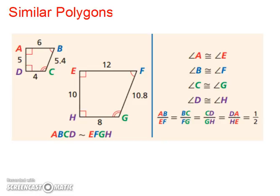Here's an example of similar polygons. Notice your corresponding angles are congruent and then your corresponding sides are proportional. They all give you a half when you reduce them. Therefore, ABCD is similar to EFGH.